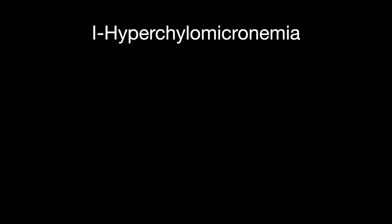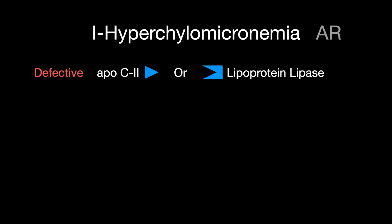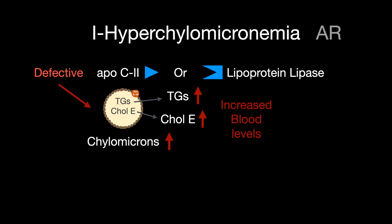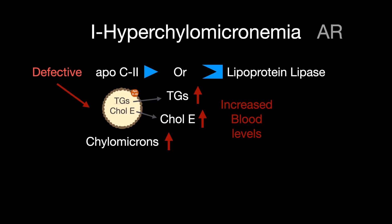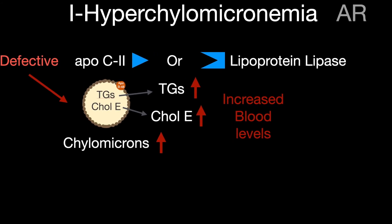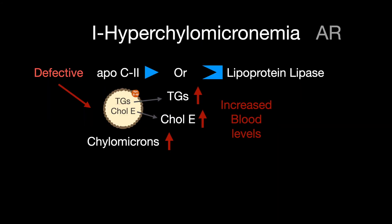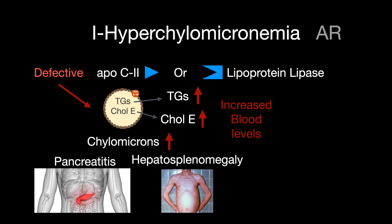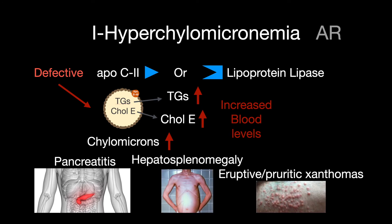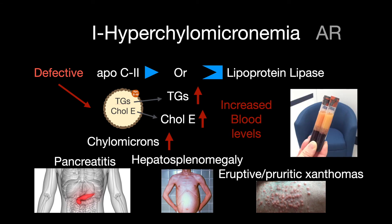Type 1 hyperchylomicronemia is autosomal recessive and caused by either lipoprotein lipase or APO-C2 deficiency. Both are involved in the uptake of chylomicrons into the tissues. The result is increased blood levels of chylomicrons and their constituents — triglycerides and cholesterol. This results in pancreatitis, hepatosplenomegaly, eruptive and pruritic xanthomas, a creamy layer in the supernatant, and no increase in atherosclerosis.